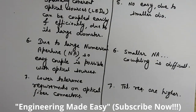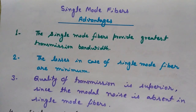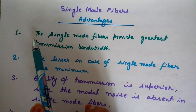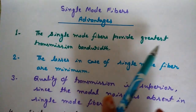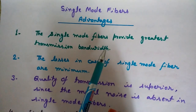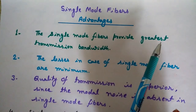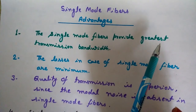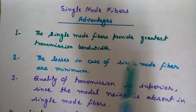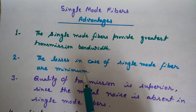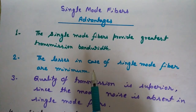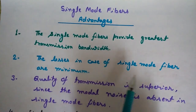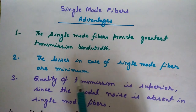That covers the comparison of step index fibers and their two types — multi-mode and single mode. Now let's see the advantages that single mode fibers offer. The first advantage is that single mode fibers provide the greatest transmission bandwidth in comparison to other types such as multi-mode and graded index fibers. The second advantage is that losses in single mode fibers are minimum, since it supports only one mode and therefore many losses present in multi-mode are absent.